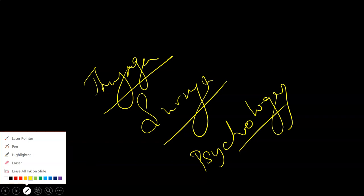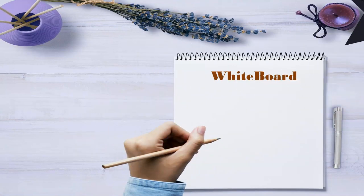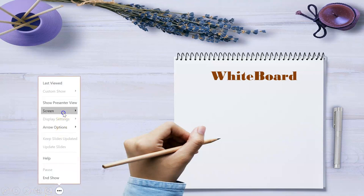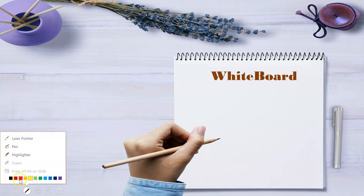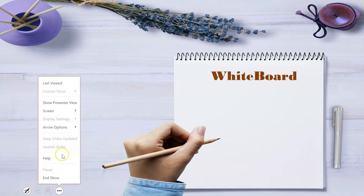Now I am moving to the next slide — you can press any key or the Enter button. Now I am going to show how we can use a whiteboard while presenting. I will go to the help menu, then the last option, then Screen, and select White Screen. Previously I had yellow color selected, which is not suitable for a whiteboard, so first I am changing the pen color — I am selecting red for better contrast on the white background.